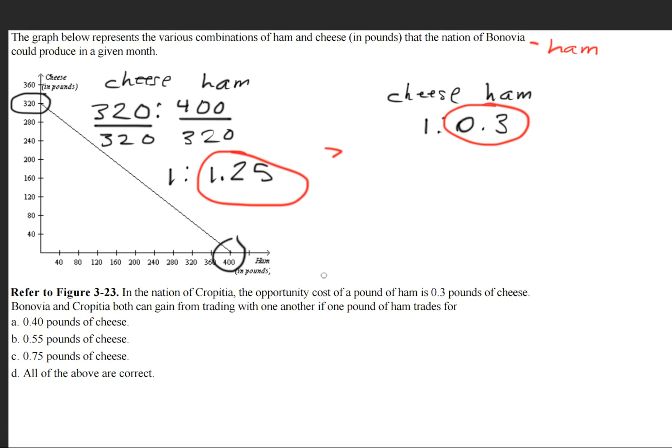But how much should they trade it for in order for them to gain from this kind of trade? Well, it'll be all of these numbers simply because they're greater than this 0.3 value right here. So the answer is D.